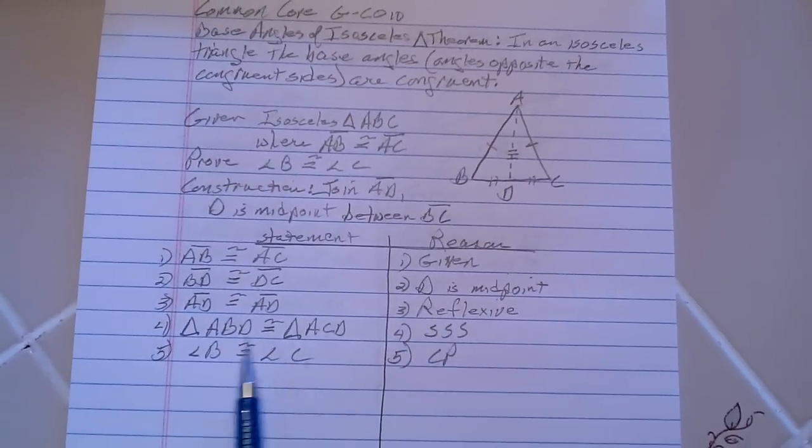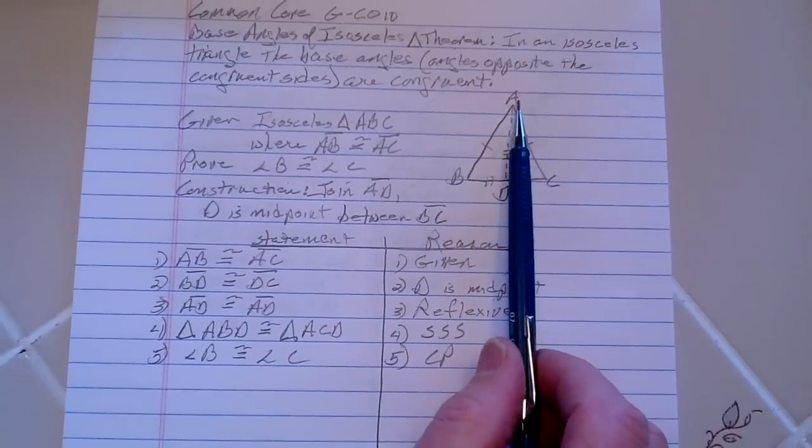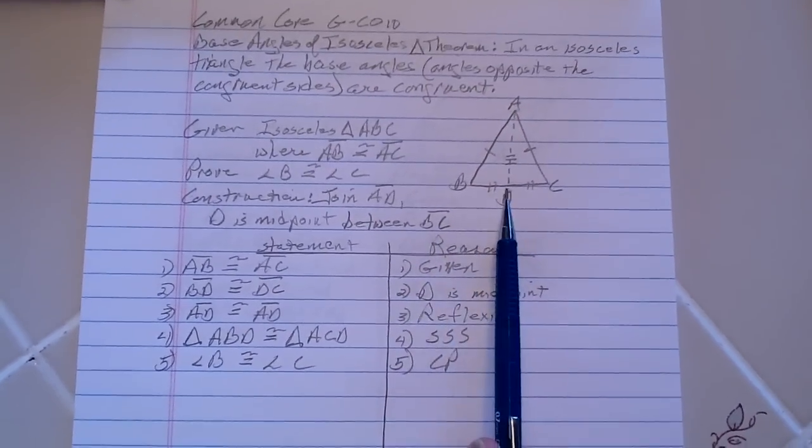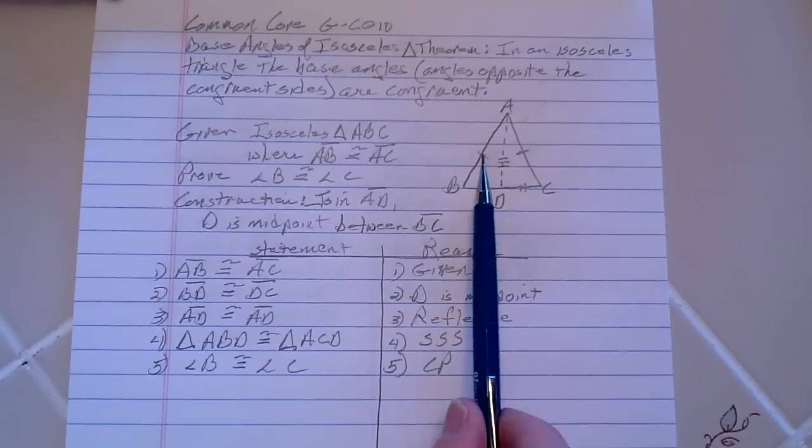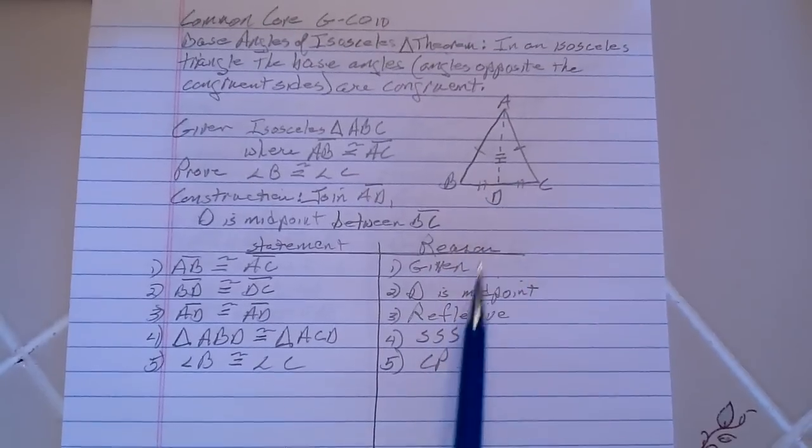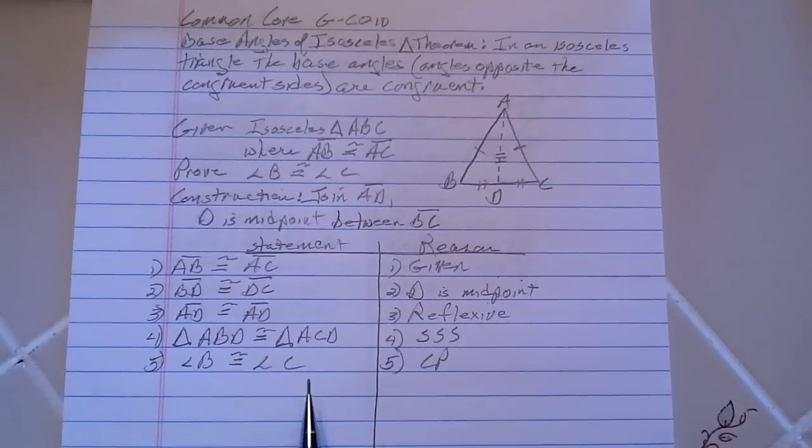Therefore, we have set everything up for ourselves to say that triangle ABD is congruent to ACD because of side, side, side. Therefore,